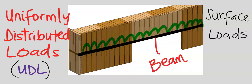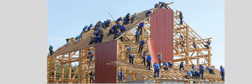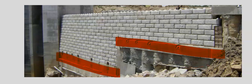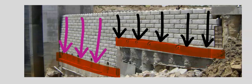Uniformly distributed loads are distributed on a structure. This beam is experiencing a uniformly distributed load. Also this beam is experiencing a uniformly distributed load; however, the values of the uniformly distributed load will be different, where the value of A will be greater than B.